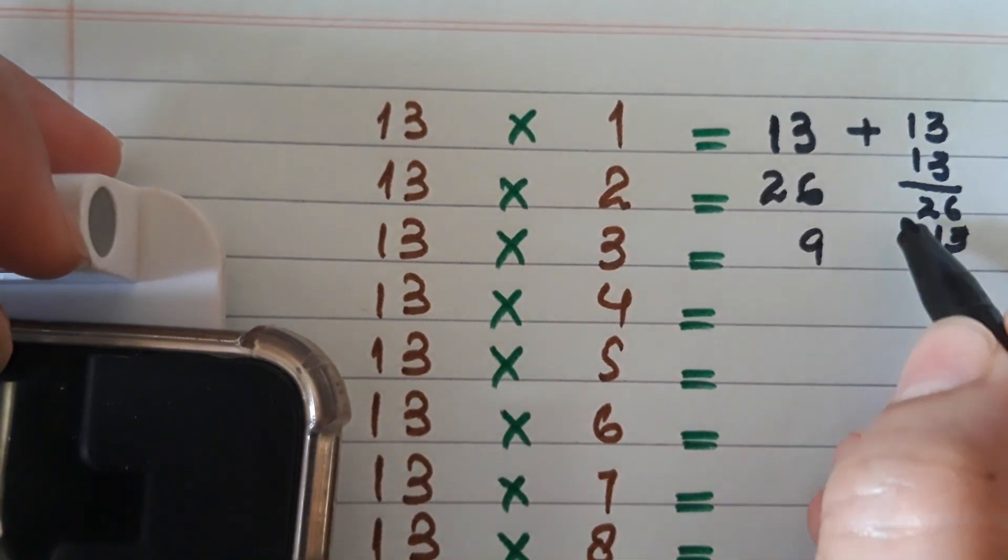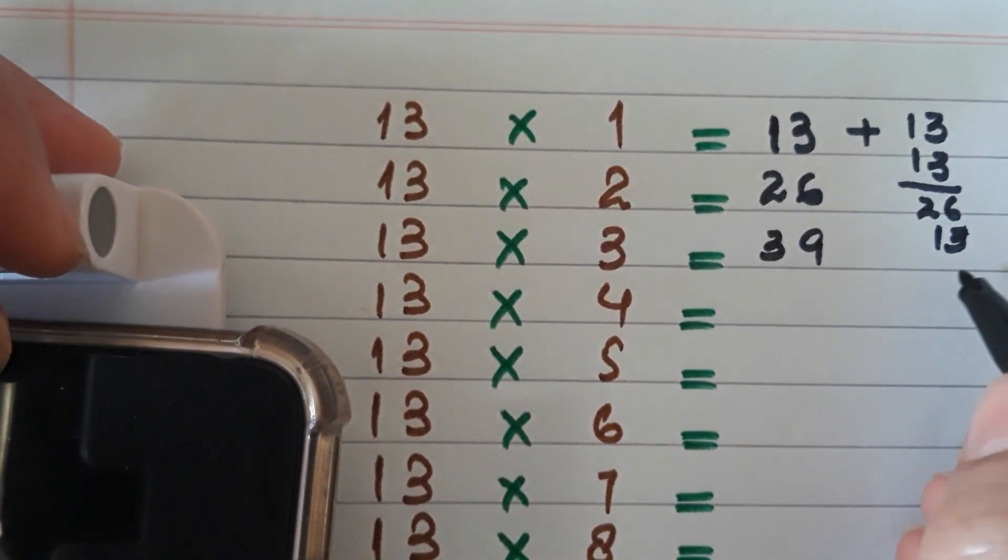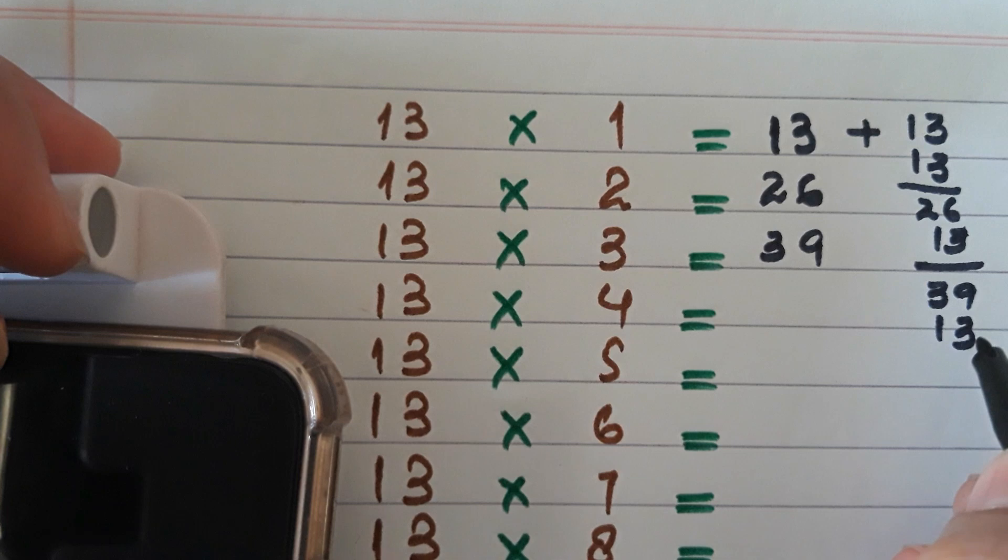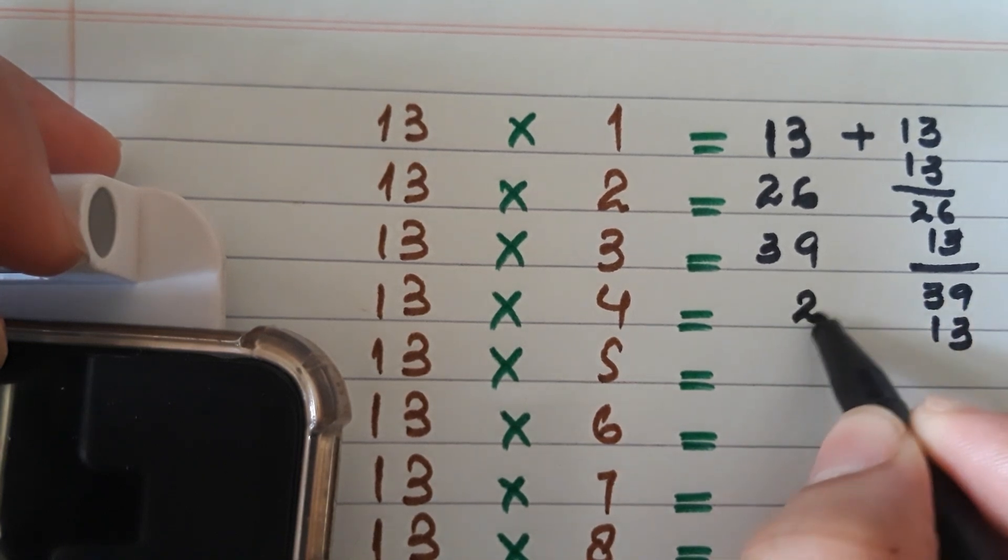Just like 13 multiplied by 3 equals 39. Now 39 will be added with 13, then we will get the answer: 13 multiplied by 4 equals 52.